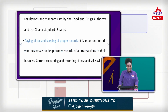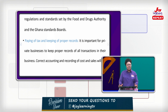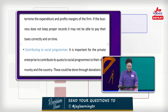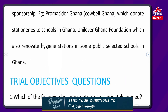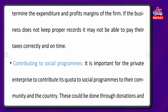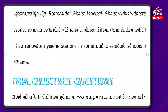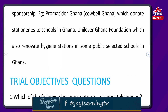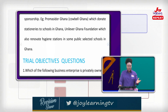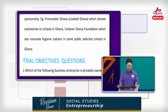Paying taxes and keeping proper records: if you don't keep proper records, you won't be able to get your transactions right — you won't know whether you are making profits or losing. Regarding contribution to social programs, companies like POMACIDOR Ghana, Cowbell, and Unilever Ghana Foundation donate stationery to schools and renovate hygiene stations in public and selected schools in Ghana.